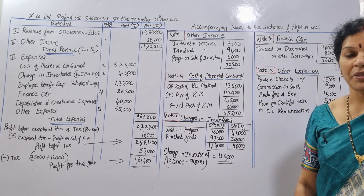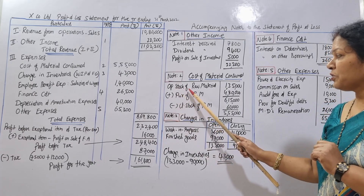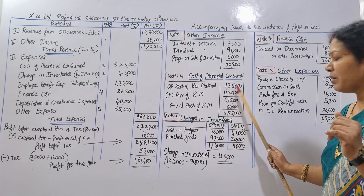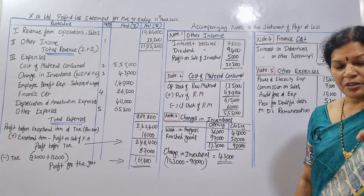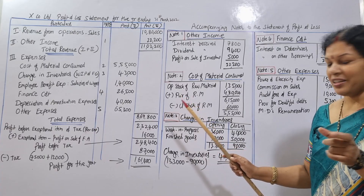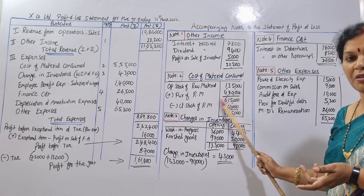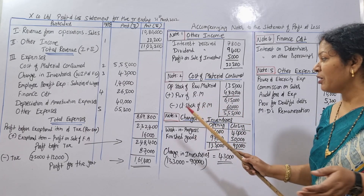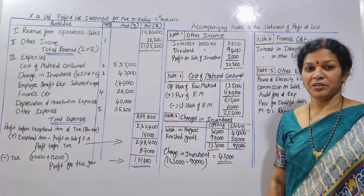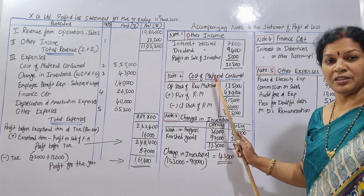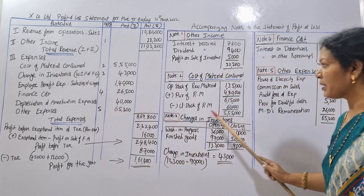Note 2 is CMC — cost of material consumed. The first entry is opening stock of raw material, which is 1,35,000. Then we add purchases of raw material. If we have ending raw material, we minus it. So the cost of material consumed is: opening raw material plus purchases minus closing raw material.